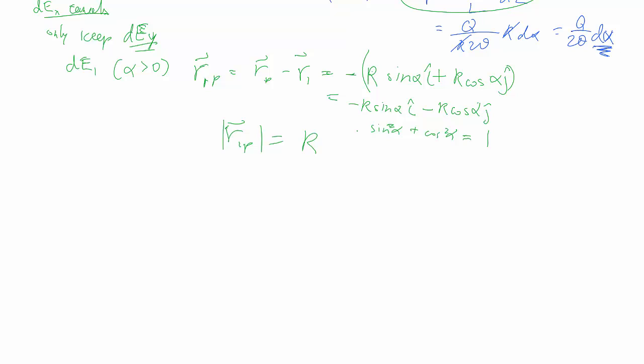So the sine and cosine, they all go away during the calculation. So it's just R, which makes sense, because for the circular arc, every single point has the exact same magnitude of the displacement.